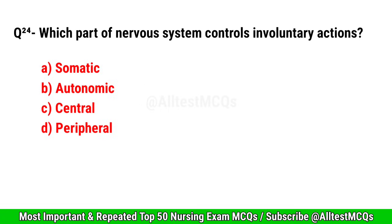Question No. 24. Which part of the nervous system controls involuntary actions? Correct option is B. Autonomic.